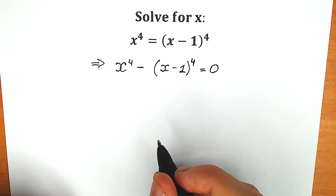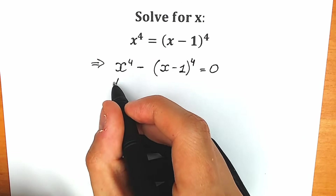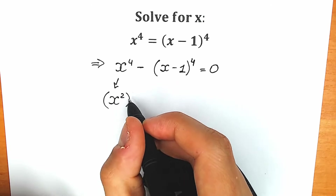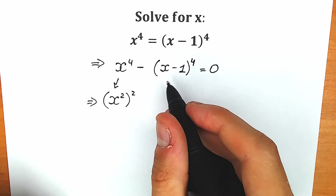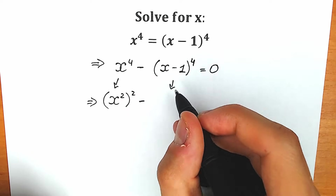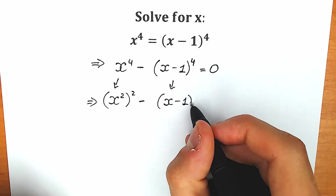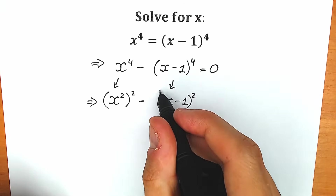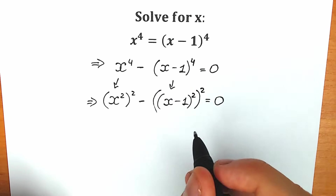Let's look closely at what we have. We can write x to the fourth power as x squared to the second power. And the same thing with the other term — we can write it as x minus 1 squared, to the second power equal to zero. Nothing changed.